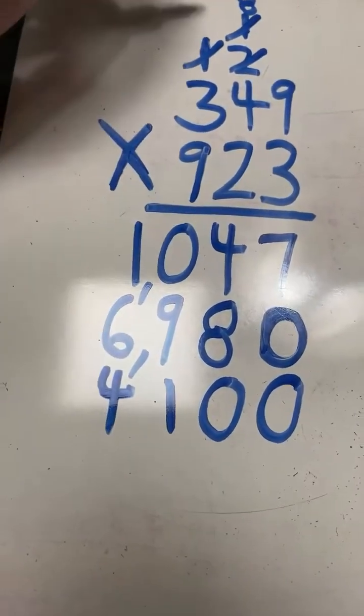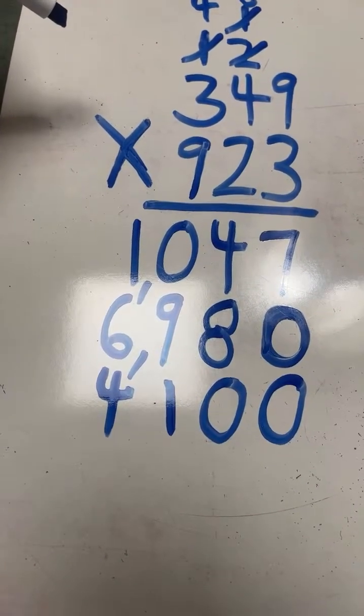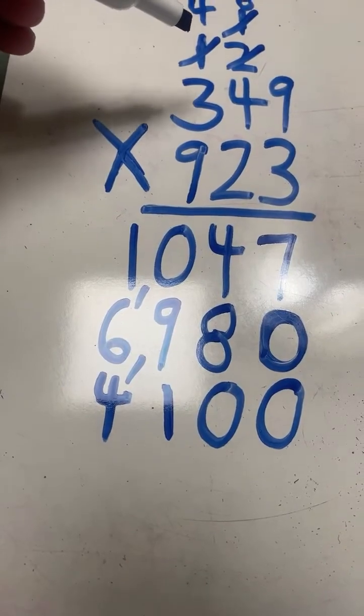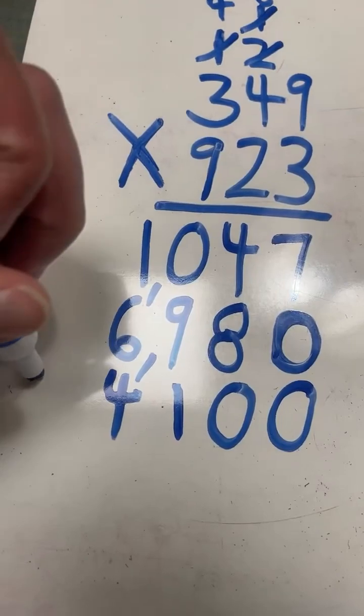4, carry the 4. 3 times 9 equals 27, plus 4 equals 31.